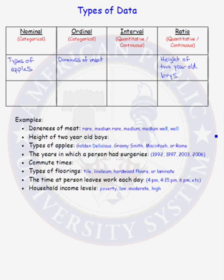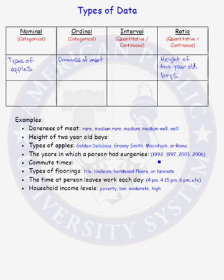Our next example is the years in which a person had surgery: for instance, 1992, 1997, 2003, and 2006. There is order: 92, 97, 2003, 2006. We can take the difference of two years and say the person's second surgery was five years after the first surgery. But taking a ratio of 1997 to 1992 does not make sense. Therefore, this is an interval type of data.